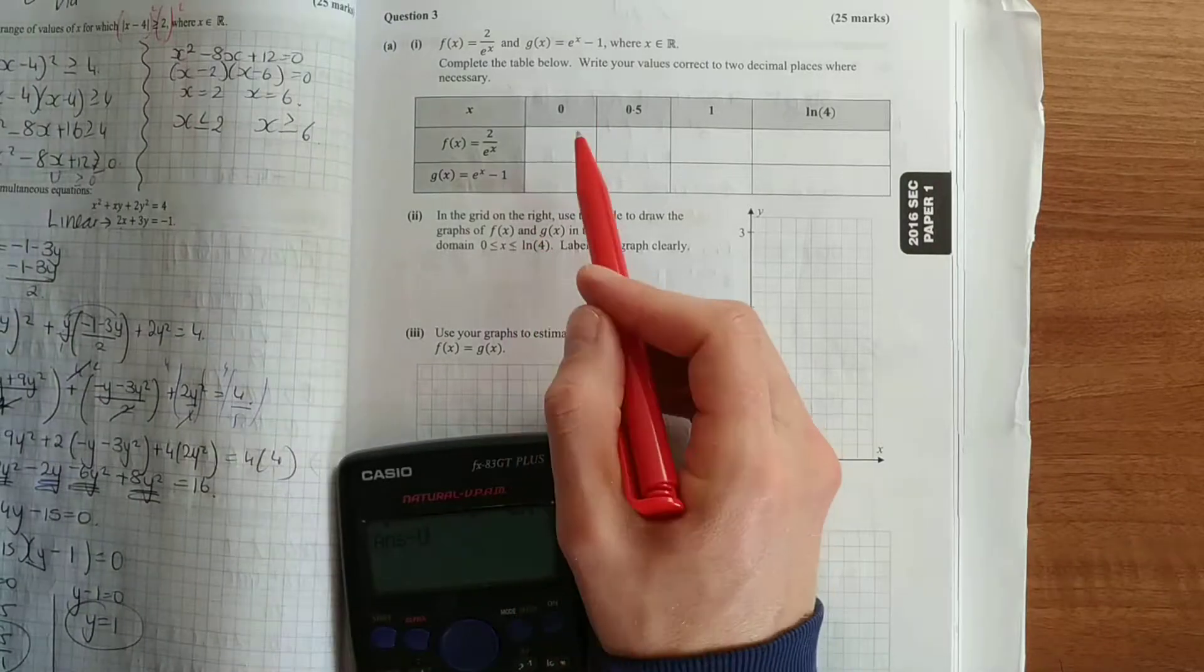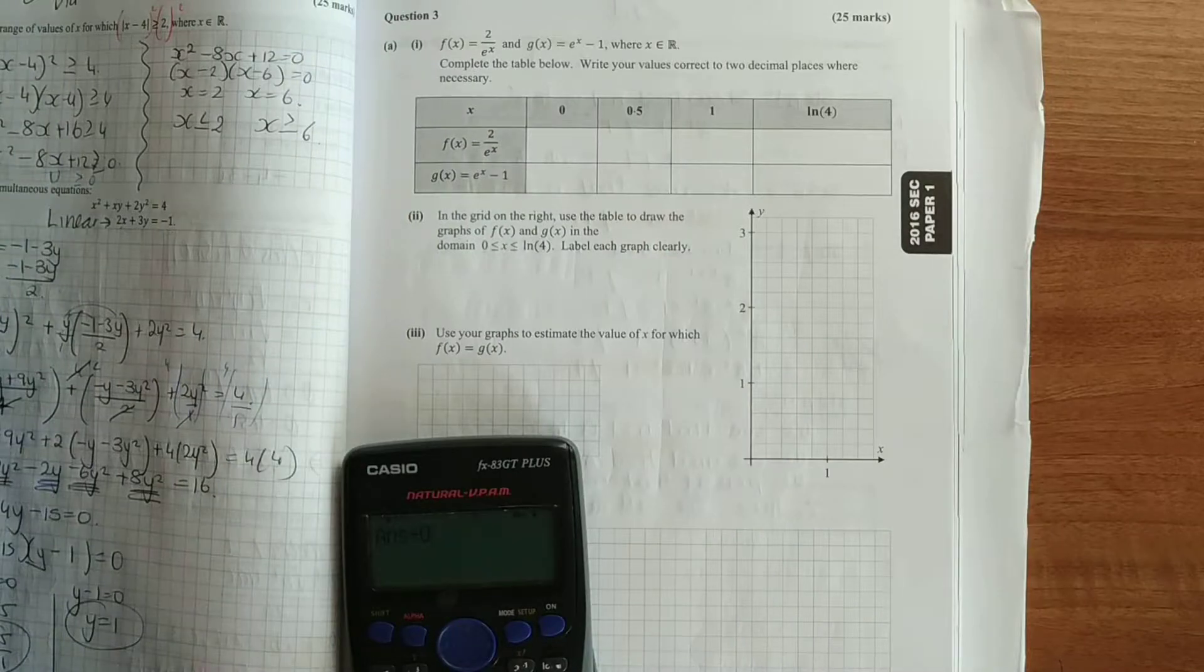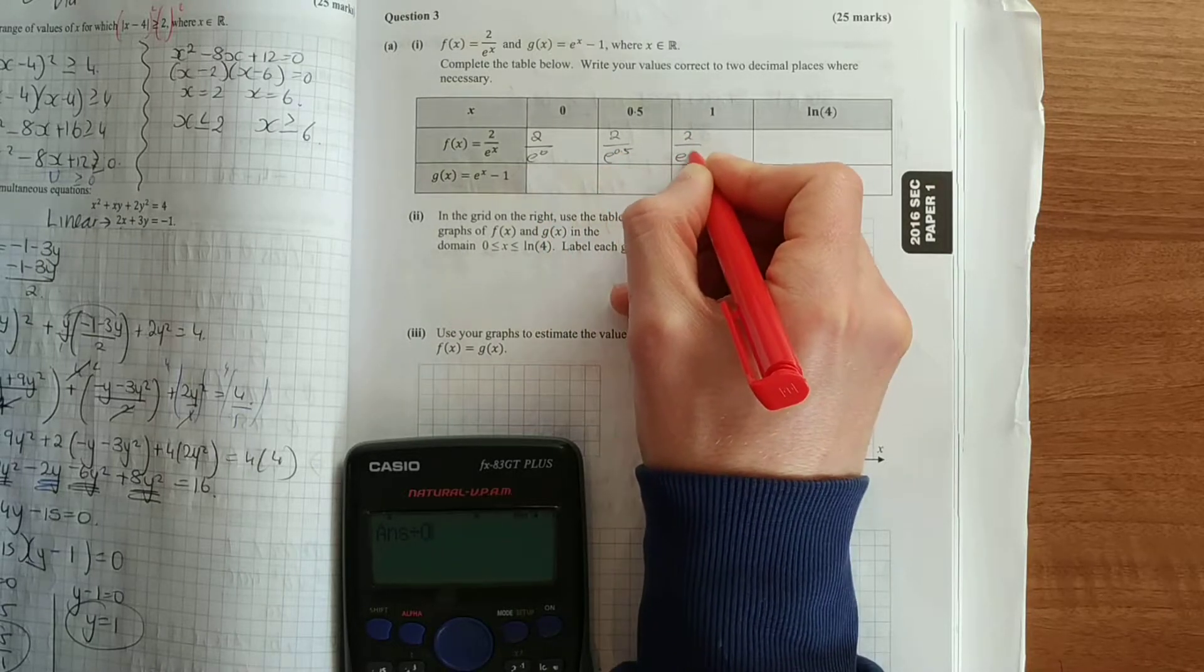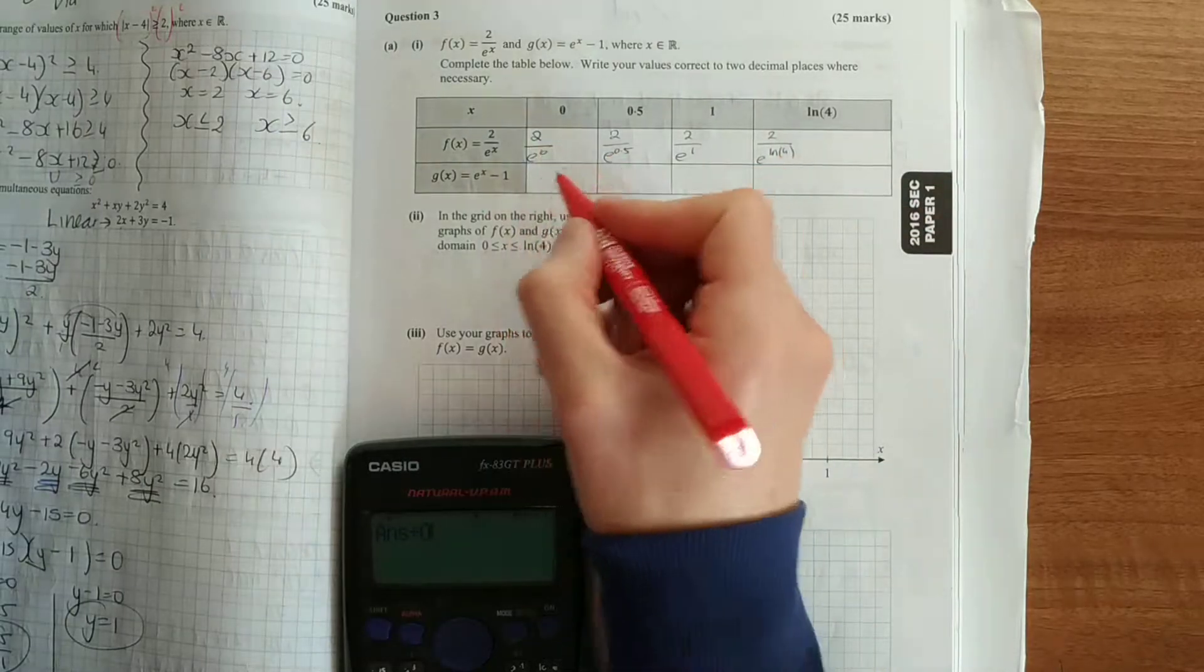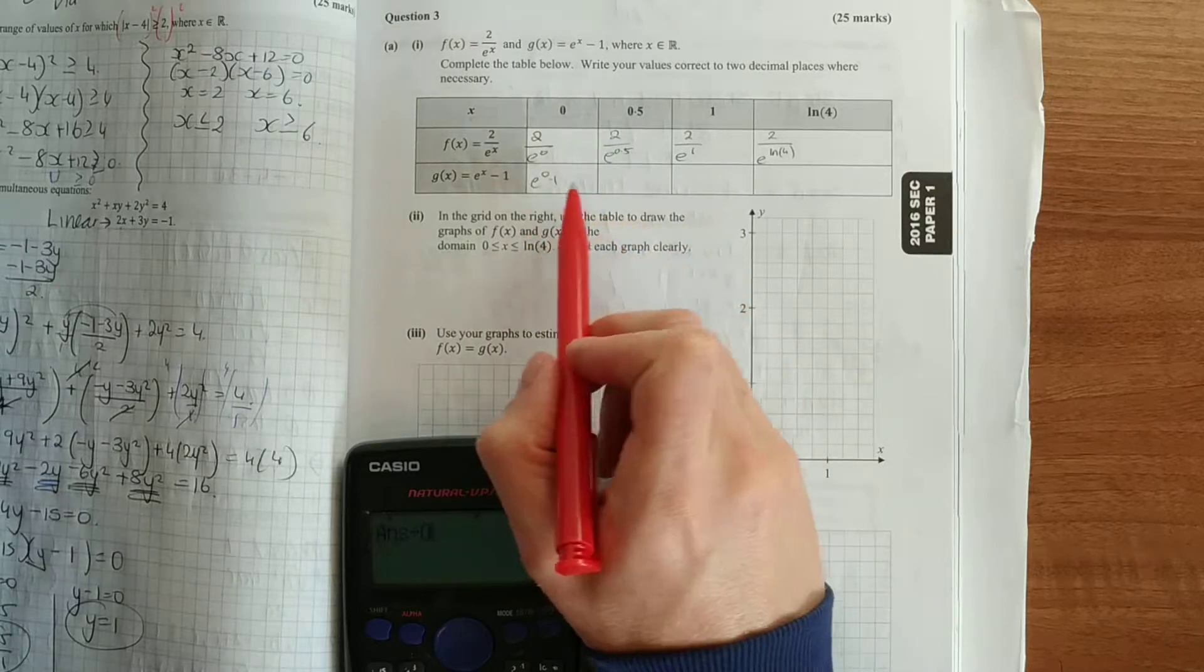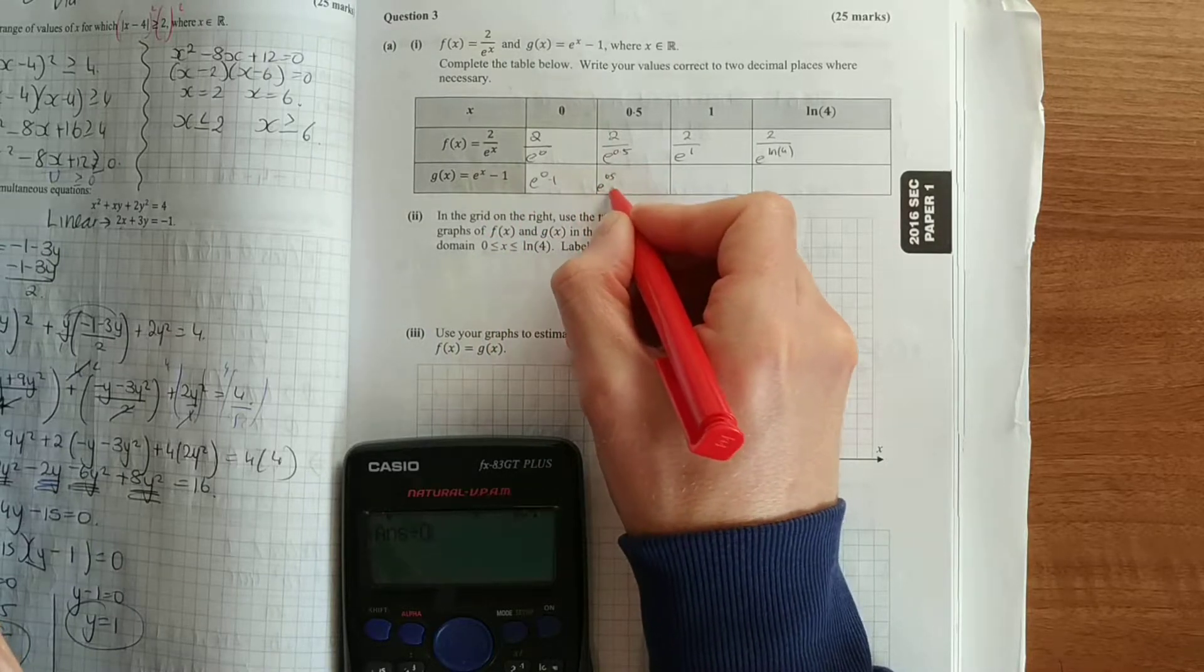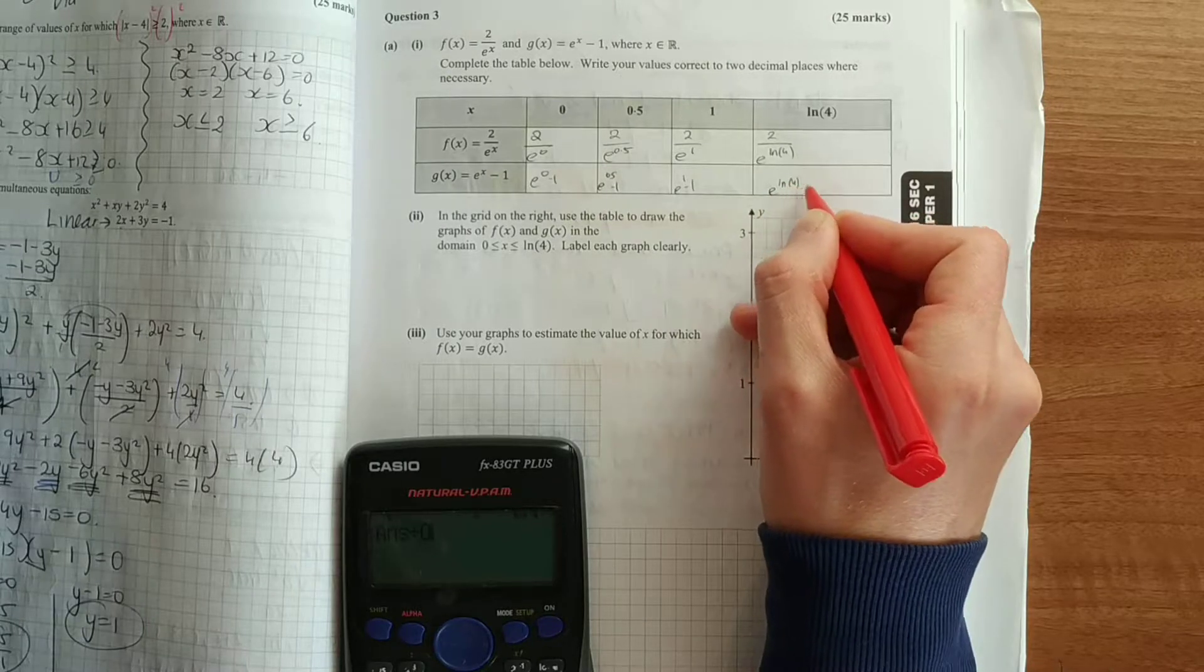So these are values of x, so anywhere we see x we're going to plug in the value given to us. So this first will be 2 over e to the power of 0, this will be 2 over e to the power of 0.5, 2 over e to the power of 1, 2 over e to the power of ln of 4. And down here we're going to have e to the power of 0 minus 1, e to the power of 0.5 minus 1, e to the power of 1 minus 1, and e to the power of ln of 4 minus 1. You wouldn't be expected to show your work in this box, it's only for the purpose of this video.